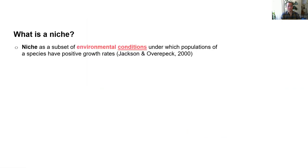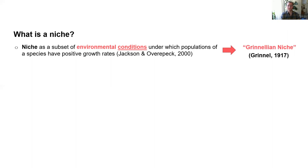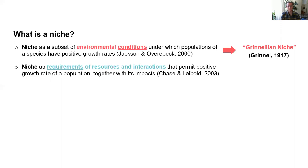To understand SDMs, it's important to know what a niche is. One definition is a subset of environmental conditions where a species has positive growth rates or can occur — in other words, a part of the environmental conditions that are suitable for a species. These are often referred to as the Grinnellian niche, in line with the theory proposed by Grinnell, where environmental and climatic factors are treated as stable. Niche has also been defined as the requirement of resources and interactions for a species — more of a biotic factor perspective — which has been referred to as the Eltonian niche.